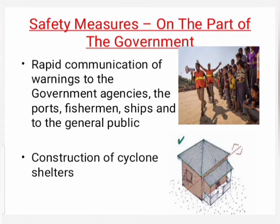Safety measures taken by the government: Rapid communication of warnings to government agencies, ports, fishermen, ships, and the general public. Construction of cyclone shelters in cyclone-prone areas, and administrative arrangements for moving people quickly to safer places.